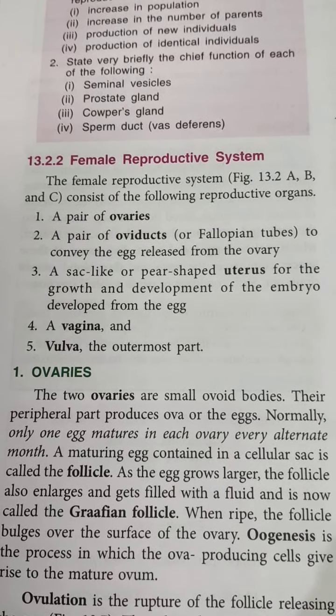The uterus is a hollow pear-shaped muscular organ located between the urinary bladder and the rectum, with an upper wider region and a smaller lower region. The vagina is a muscular tube from the lower end of the uterus to the outside; it receives the male penis during copulation. The opening of the vagina in young females is partially closed by a thin membrane called the hymen. The external female genitalia, called the vulva, contains independent openings of the urethra and vagina; the sides have two small fleshy folds — the labia minora and the labia majora.